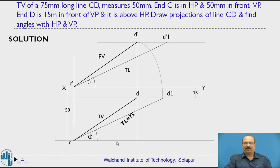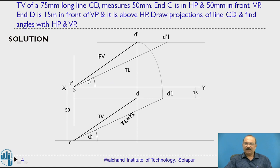After completing the problem, ensure proper line quality as per drawing norms. The front view line C dash D dash and the top view line CD must be drawn as dark lines. The XY line and locus lines are medium thickness lines. All projector lines and construction lines are drawn as thin lines. Maintaining this quality is equally important in numericals.